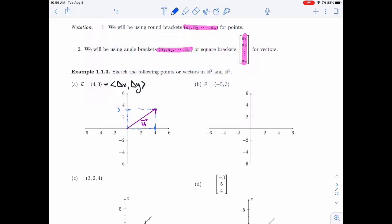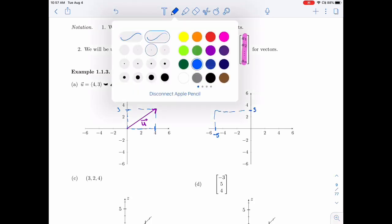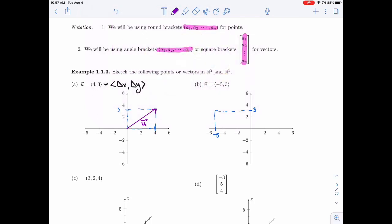For minus 5, 3, the delta x is minus 5, and so that's about here. And the y is 3, that's over here. So here's my little box. Again, if I start at the origin, I want to go to minus 5 and then up 3. That's v. So the minus told you to go left instead of going right, but that's the only real difference between a and b.